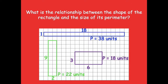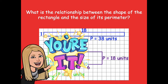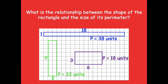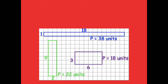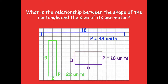What is the relationship between the shape of the rectangle and the size of its perimeter? Rectangles that are long and skinny have greater perimeters because more of each side is part of the perimeter — you count more squares as you go around. In a more compact rectangle like the purple one, that whole middle row doesn't get counted as perimeter but still counts toward the area.